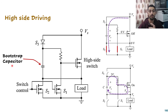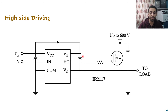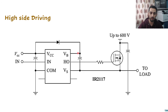One example of a bootstrap IC is the IR2117. It has four terminals and requires an external diode and capacitor for the bootstrap circuit. The capacitor is connected between a point that drives the gate through an internal switch, and is referenced to the source of the MOSFET — not to ground — because referencing to ground would cause improper switching. The capacitor must be charged by an external voltage source through the bootstrap diode.